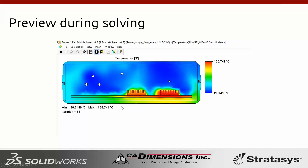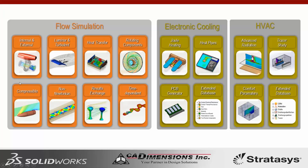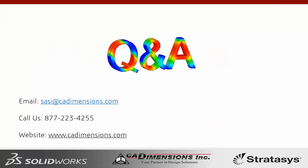Everything you've seen today is within the SolidWorks Flow Simulation package. There is also an additional package for electronic cooling which takes things further — including Joule heating, pipe heating, a PCB generator, and an extended database for fans, heat sinks, materials, and printed circuit boards. That brings us to the end of this webinar. Please feel free to email me, call, or visit our website. I'll now open the floor to questions.